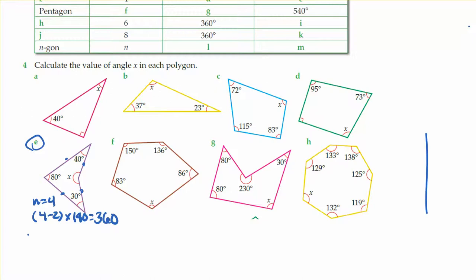So to figure out what x is, we see what we've already used up. 360 minus 40, minus 80, and minus 30. We get 210 degrees. So x here, the unknown angle, is going to be 210 degrees, because inside that polygon all of those angles should add up to 360.